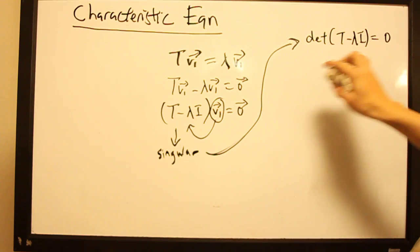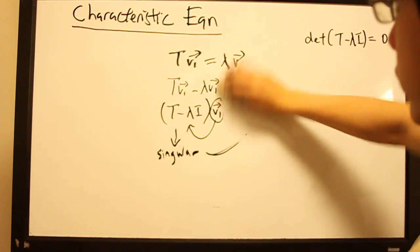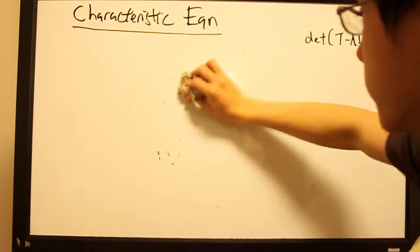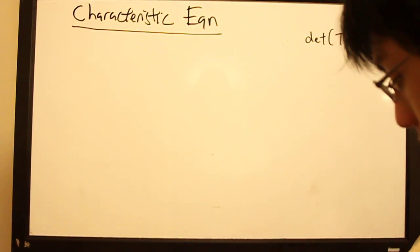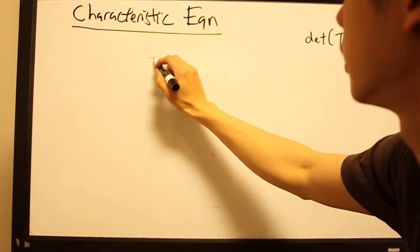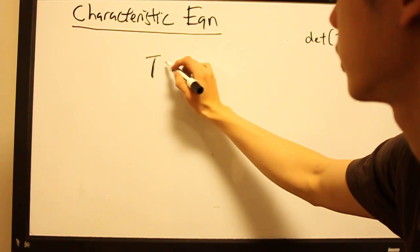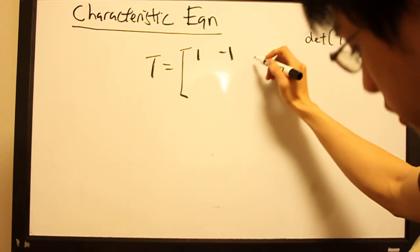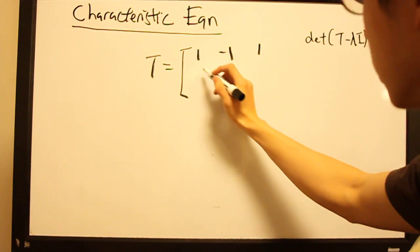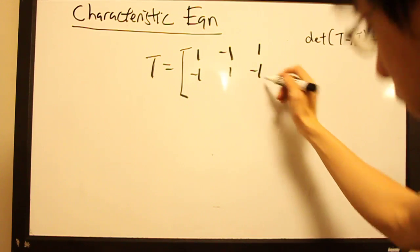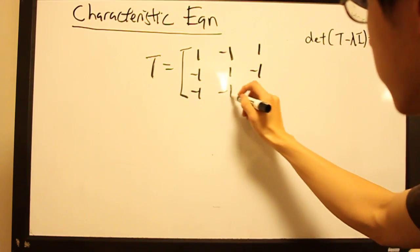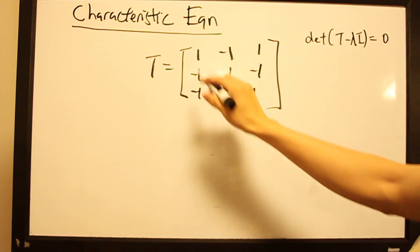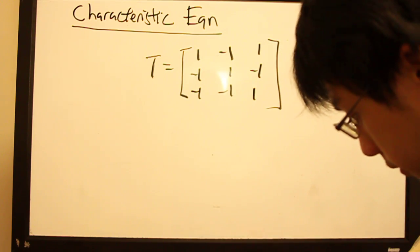This is an important fact we will use to find the eigenvalues lambda of transformation t. To illustrate, let's define a transformation t represented by the 3x3 matrix with 1s on the diagonal, minus 1s off-diagonal, and a 1 in the corner — essentially a matrix of minus 1s with 1s on the diagonal.